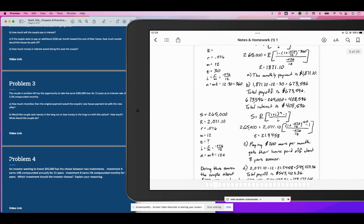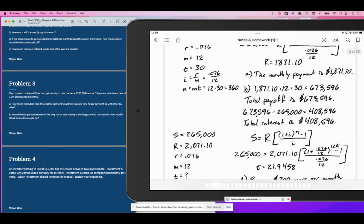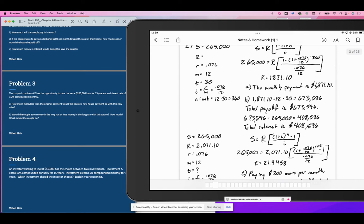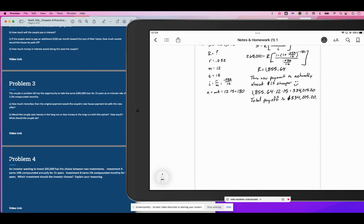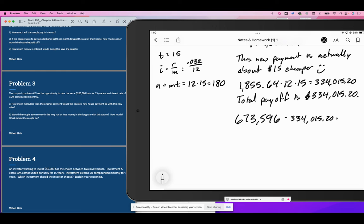We need to compare that to the original amount, which is enormous: $673,596. We're going to subtract those to see how much this will save the couple. It looks like about $340,000, plus they have a lower monthly payment. What a no-brainer.